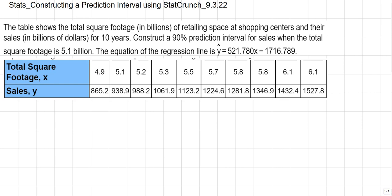The table shows the total square footage in billions of retailing space at shopping centers and their sales in billions of dollars for 10 years. Construct a 90% prediction interval for sales when the total square footage is 5.1 billion.